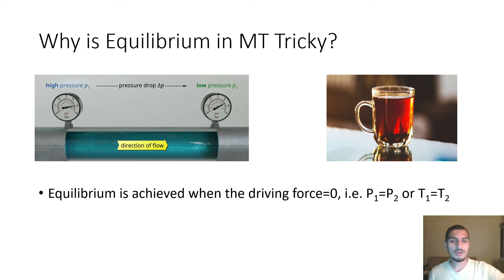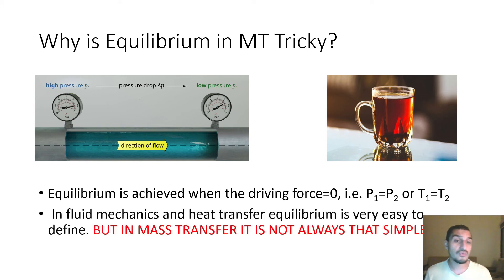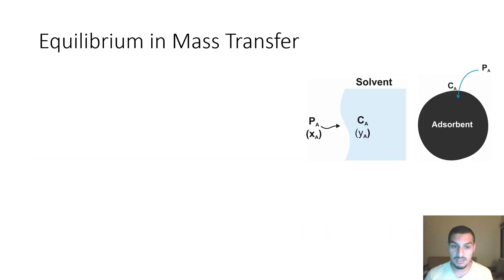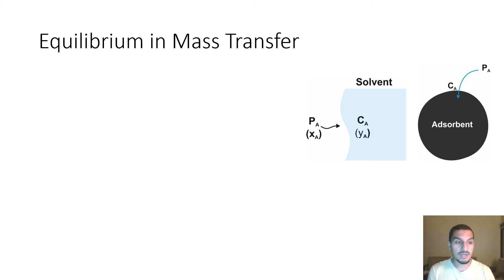The same applies to single-phase mass transfer. If you spray perfume in one corner of a closed room and come back after a week, the concentration of perfume will be the same throughout — concentration is the driving force and equilibrium is reached when concentration is uniform. But this is not the case for multi-phase systems. In heat transfer, temperature is measured in the same units whether in a liquid or gas phase, so equilibrium is simply when temperatures are equal regardless of phase.